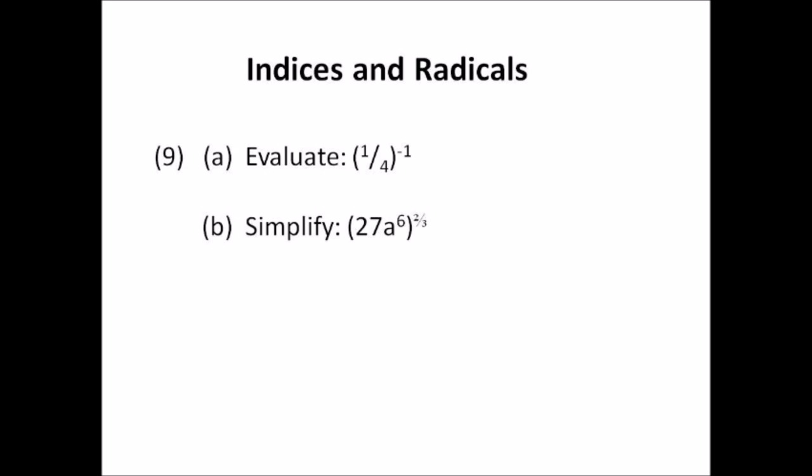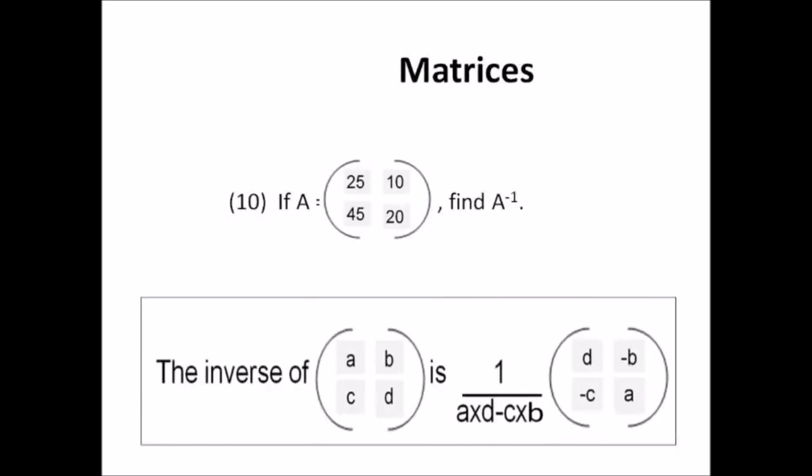Number ten: matrices. If A equals the matrix with entries 25, 10, 45, 20 — find A to the negative one, that is, find the inverse of A. The formula is given to you. If you have matrix with entries a, b, c, d, the inverse is one over (ad minus cb), then you switch a and d and put negatives on c and b. Match your numbers to a, b, c, d and you're straight. You don't even have to memorize the formula.